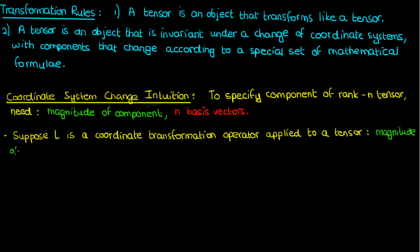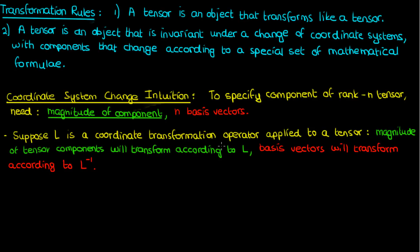Now what happens if I apply a coordinate transformation given by some operator L to some random tensor? Well, the magnitude of the tensor components will then transform according to the operator L, whereas the basis vectors will transform according to L inverse.